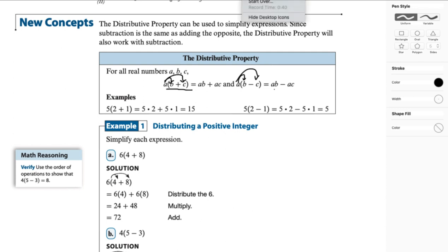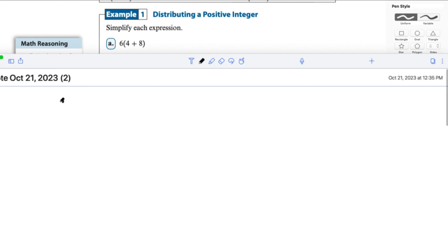Let's start with example one. So here in part A, we are asked to distribute 6 over the 4 plus 8. And so we can do that. We're going to simplify the expression, but we'll do it two ways. So one way is the way we usually would. We're going to do what's in parentheses first, so this becomes 6 times 12. And we know that 6 times 12, since 4 plus 8 is 12, 6 times 12 is 72.